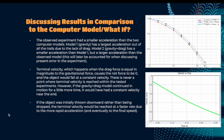And finally, if the object was initially thrown downwards rather than being dropped, the terminal velocity would be reached at a faster rate due to the more rapid acceleration and eventually to the final speed because it would just gain all of its speed much quicker.